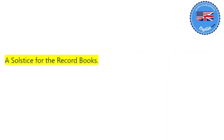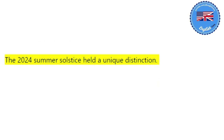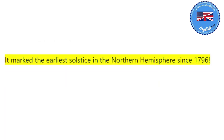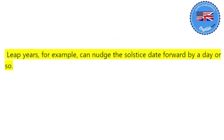A solstice for the record books. The 2024 summer solstice held a unique distinction — it marked the earliest solstice in the Northern Hemisphere since 1796. This slight shift happens because our calendar year doesn't perfectly match Earth's orbit around the sun. Leap years, for example, can nudge the solstice date forward by a day or so.